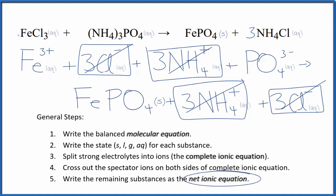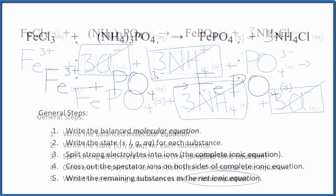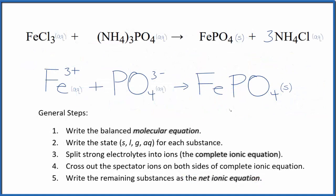What's left is the net ionic equation for iron three chloride plus ammonium phosphate. Let's remove our spectator ions. And this is our balanced net ionic equation.